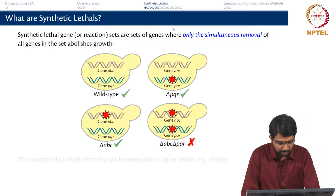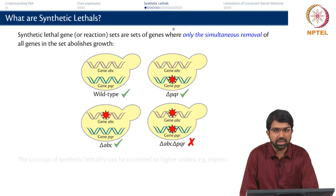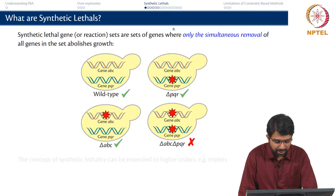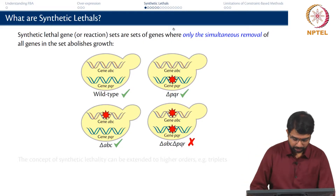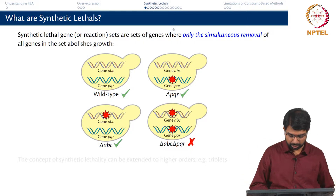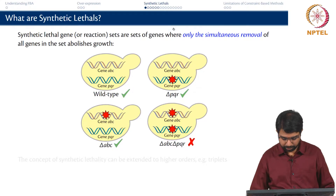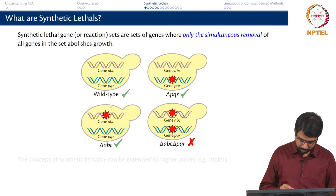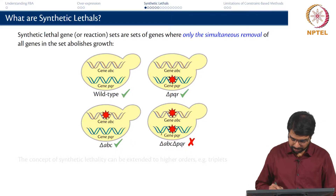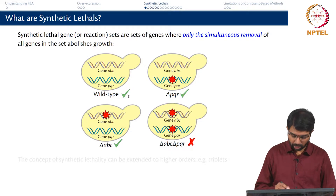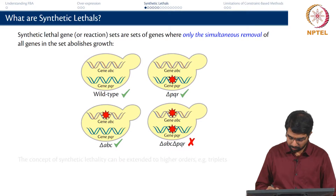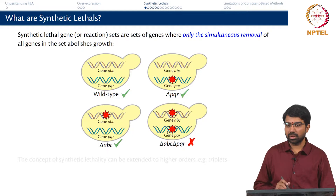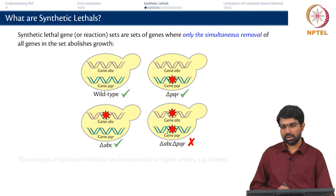Let us consider a simple example. There are 2 genes, ABC and PQR. When you delete ABC, as you see in the diagram, nothing happens. When you delete PQR alone, the organism still grows. When you delete both genes together, the organism dies.